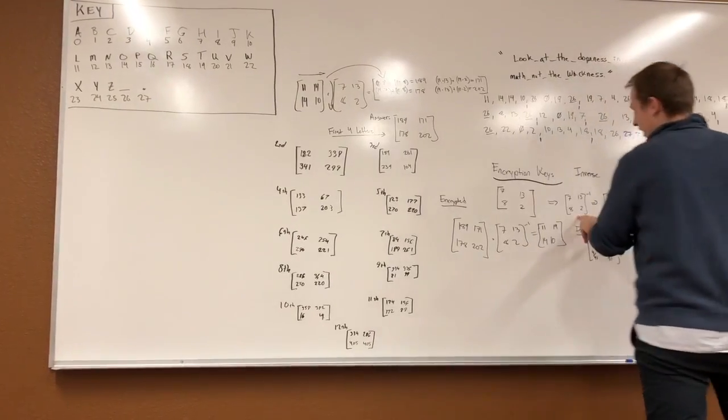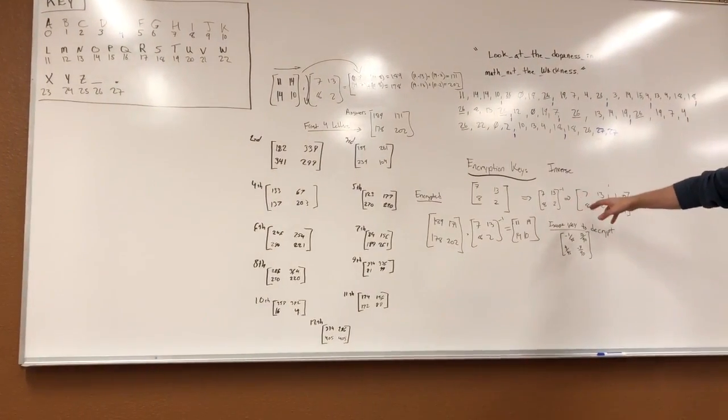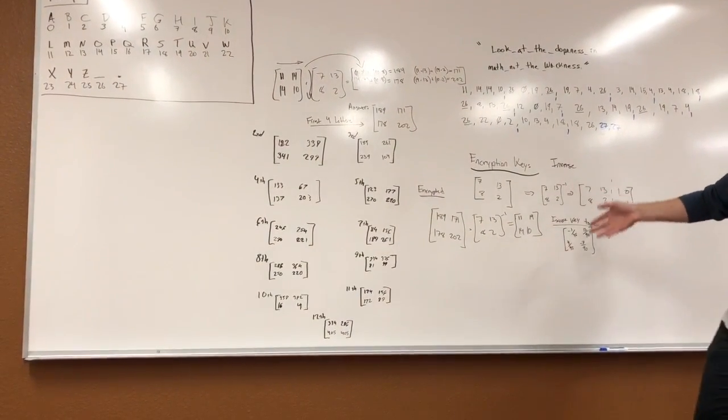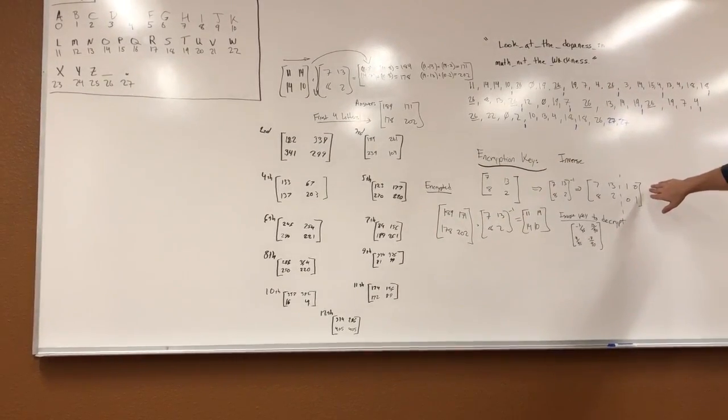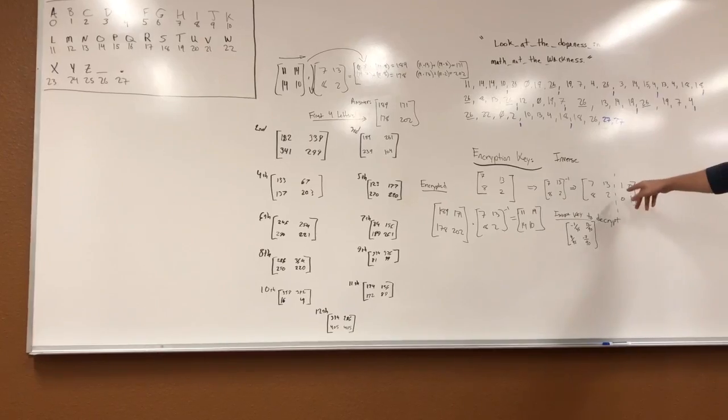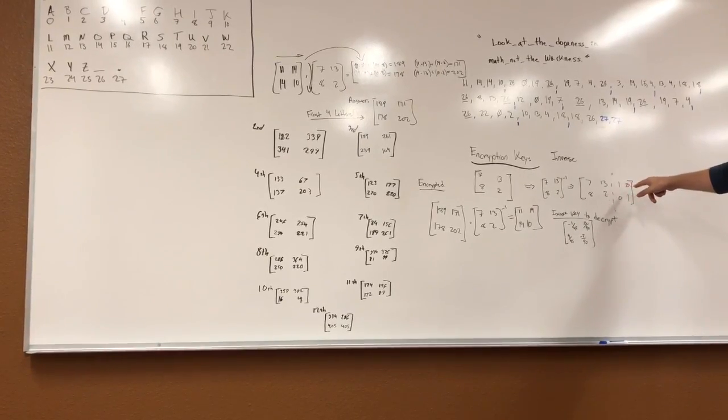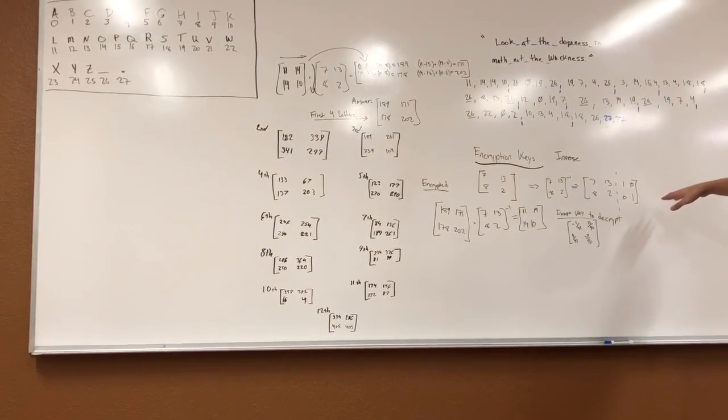So to decrypt it, they need the key: 7, 13, 8, 2. To decrypt these numbers in this message, we need to get the inverse. So to get the inverse, you set the right side to 1, 0, 0, 1, and you solve for it.